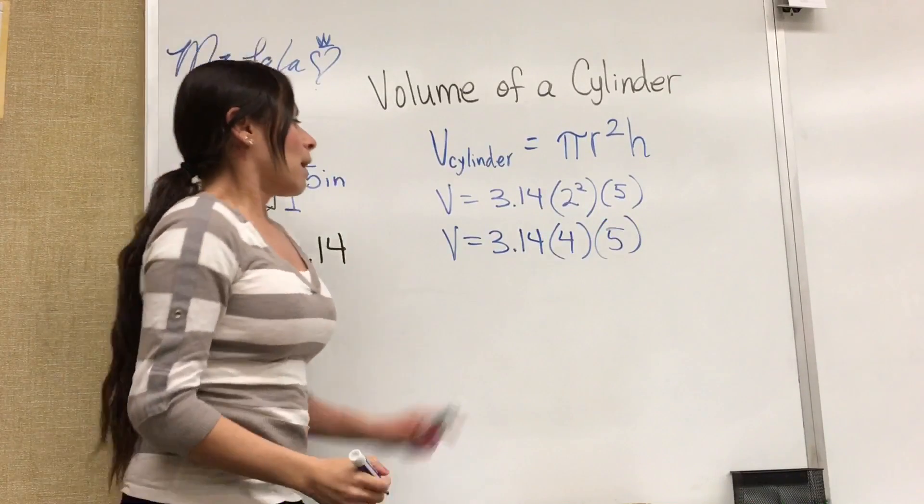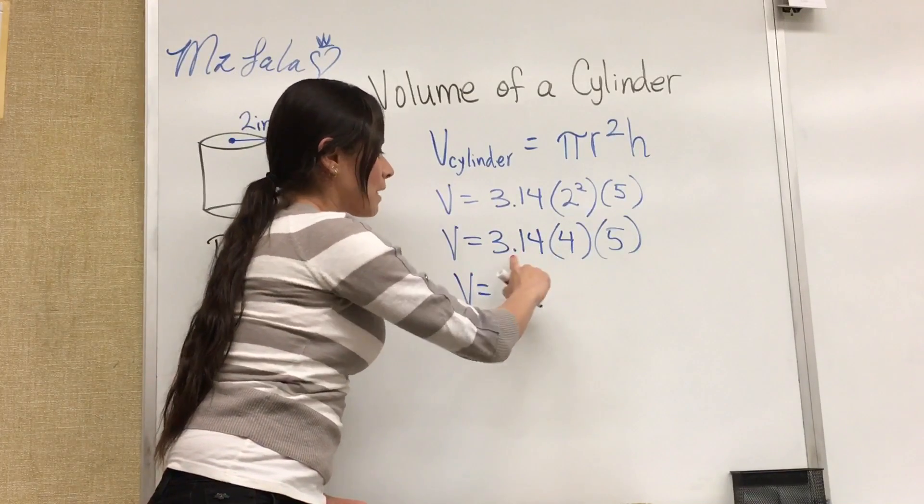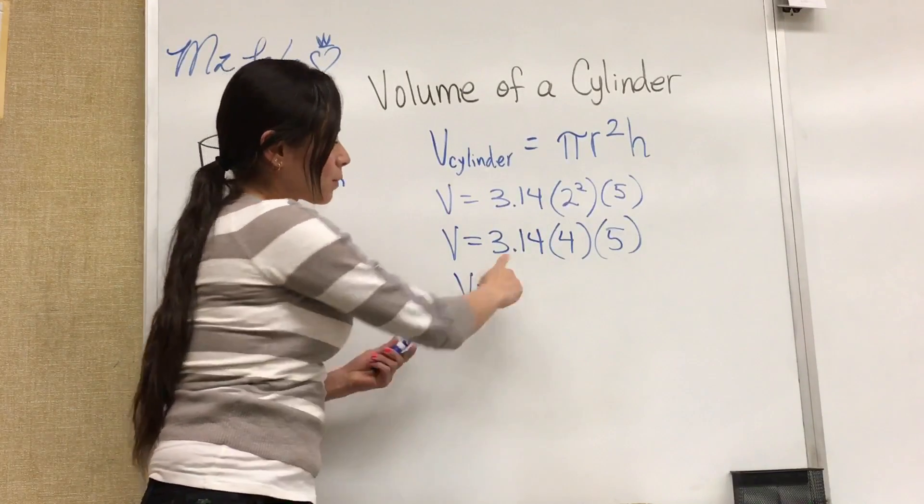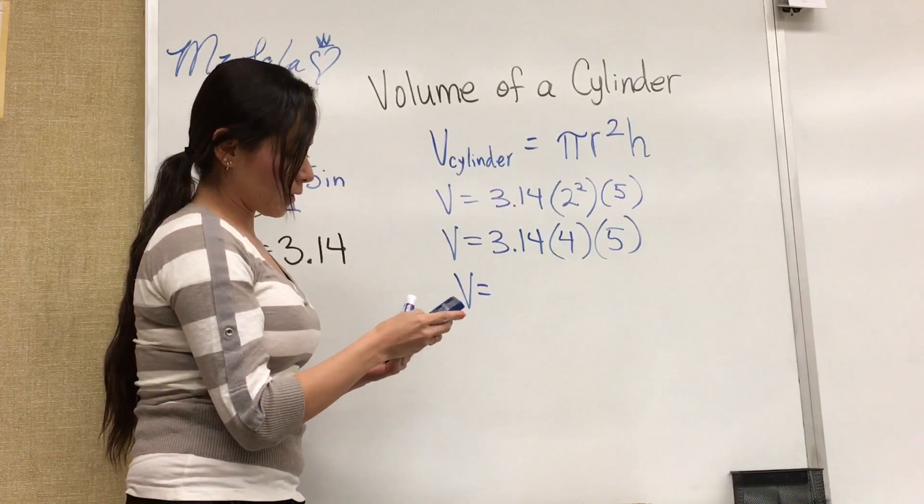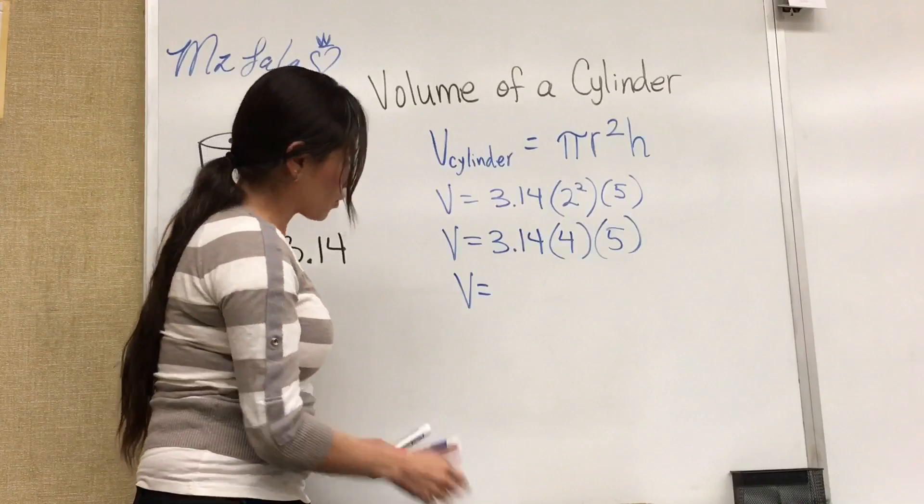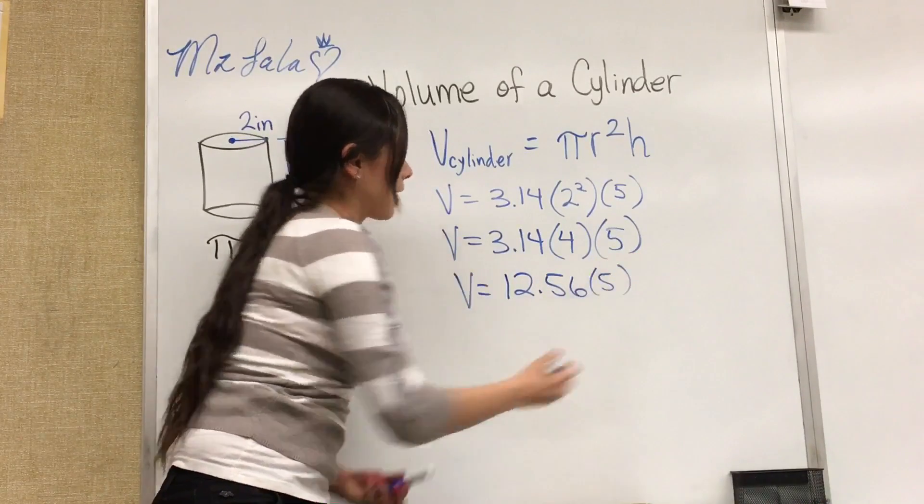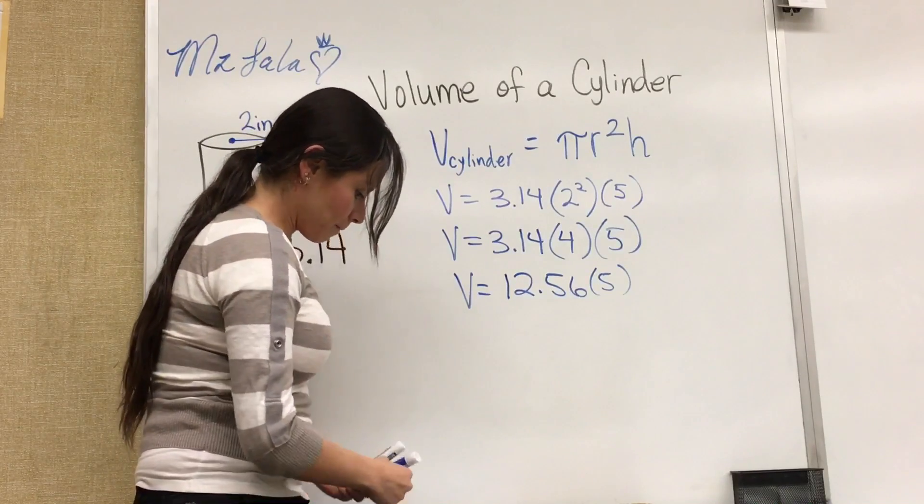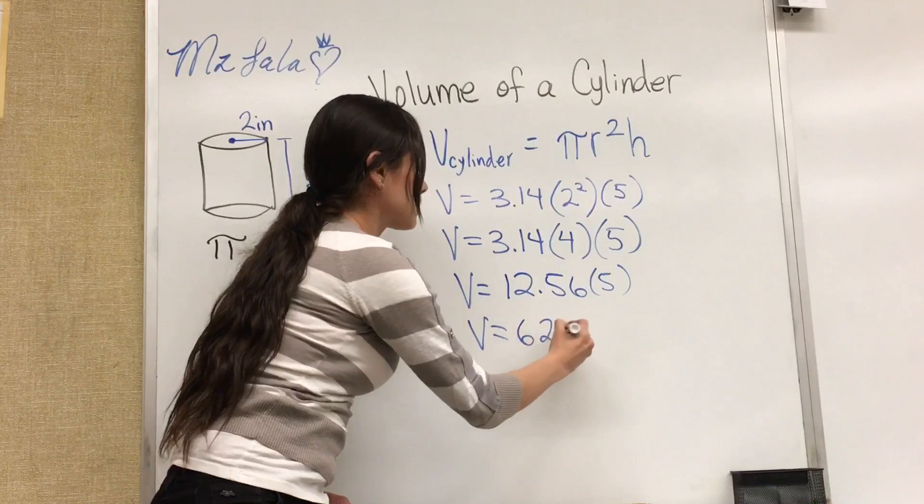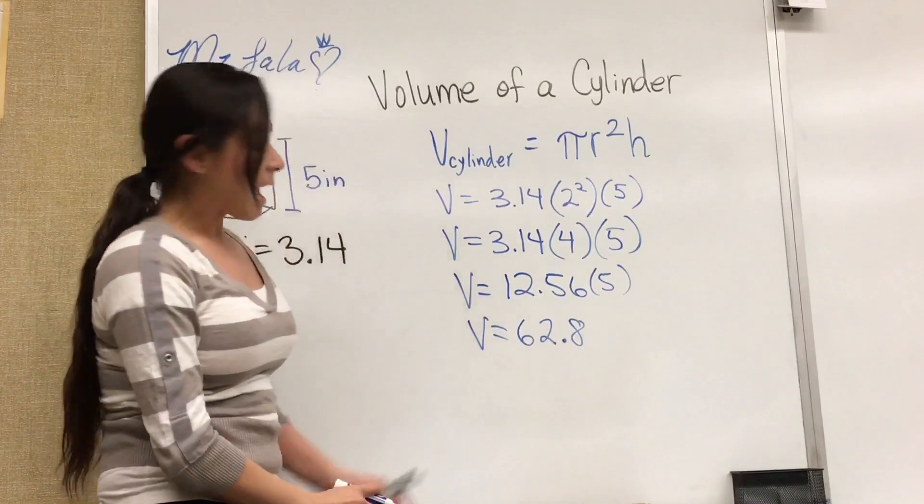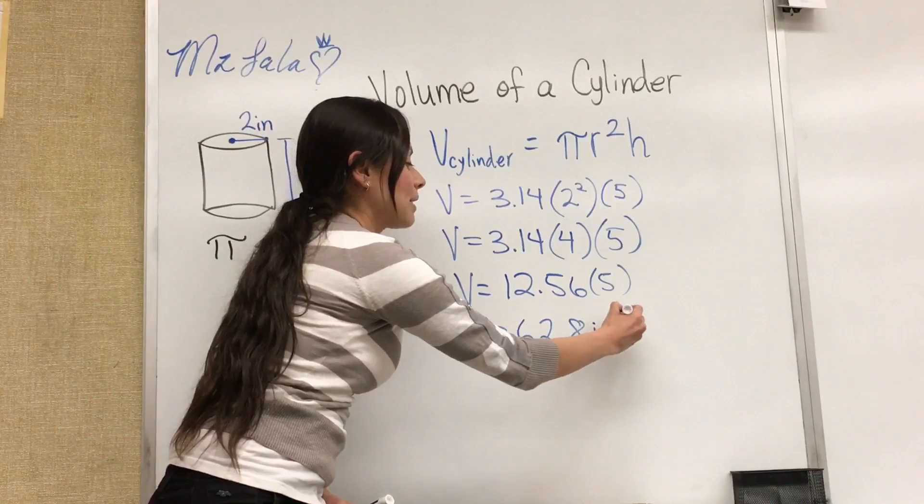So now we have all multiplications so we can multiply our pi times 4. So that would be 3.14 times 4. That would equal 12.56 times 5 and that would be our volume which would be 62.8.